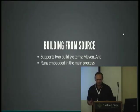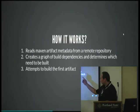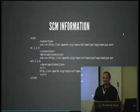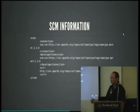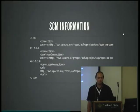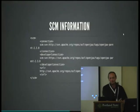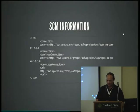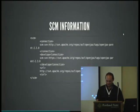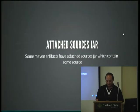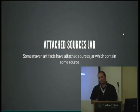What happens when you can't access the source information? For example, the repository is behind an authentication wall, you don't have access, or the artifact is so old the repository no longer exists or has moved. In Maven central there's no way to update that information - it's stuck there essentially forever. Another potential solution is attached sources JARs.